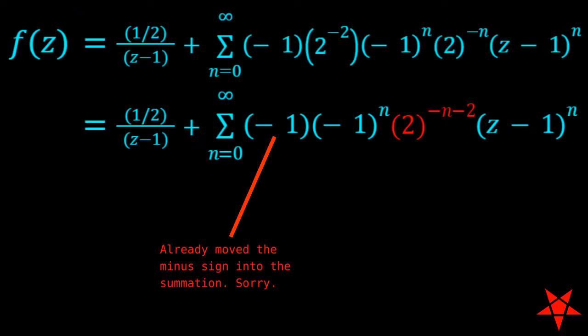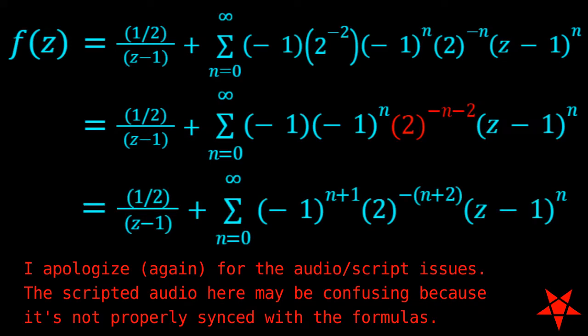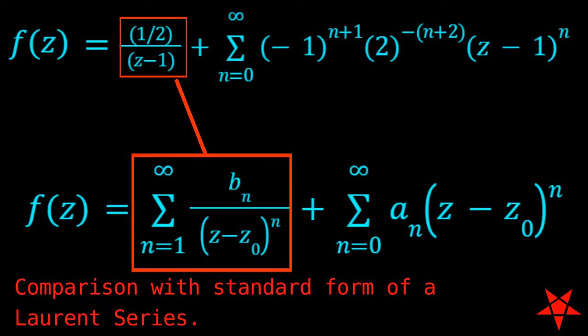Negative 2 quantity raised to the negative n is now split into negative 1 quantity raised to the negative n times 2 raised to the negative n. Factoring in the negative 1 that had previously been left outside of the summation, we now have negative 1 quantity raised to the negative n plus 1 times 2 to the negative n plus 2 times z minus 1 to the n. We now have a Laurent series centered about z minus 1.